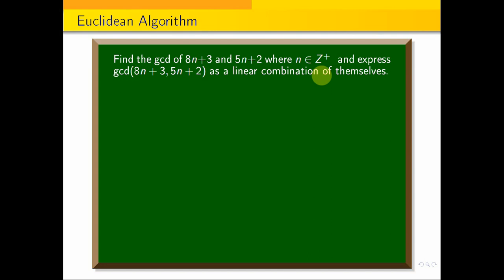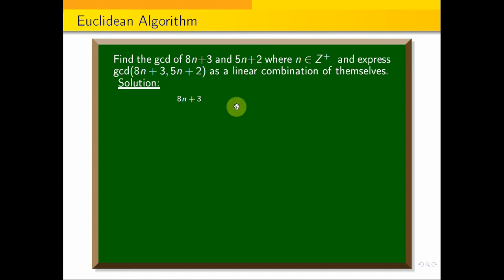Now, how do we solve this? We know that we apply the Euclidean algorithm — we apply the Euclidean algorithm. What is greater? We divide, and find the remainder, until we get 0, we will do the procedure. 8n plus 3 divided by 5n plus 2 is equal to 1 times of 5n plus 2, remainder 3n plus 1.